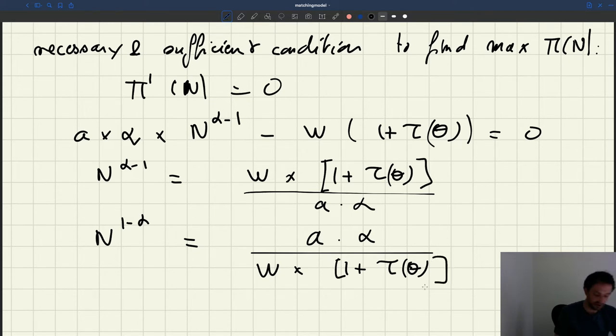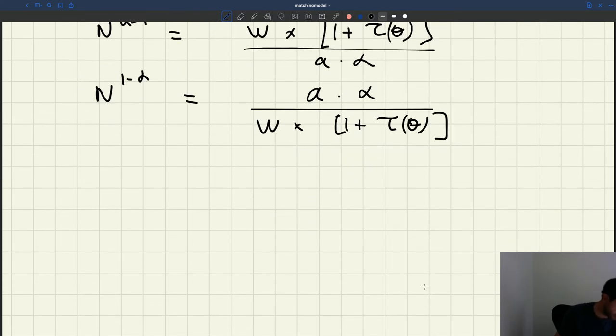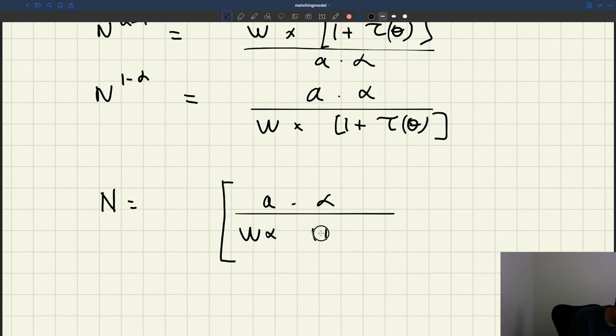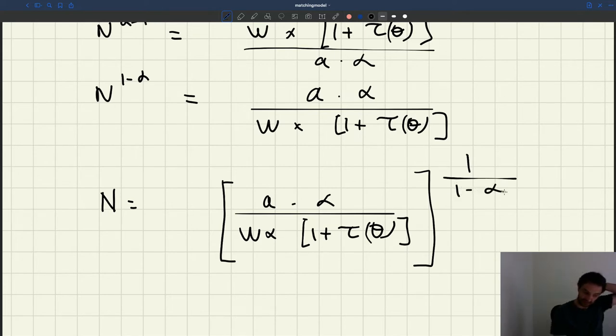And then what I'm interested in is actually the number of producers. So I get that n is equal to [a times α divided by w times (1 + τ(θ))]^(1/(1-α)). And then of course I have to make an exponent here of 1 over 1 minus α. So I've basically exponentiated both sides of the equation by 1 over 1-α, which here gives me a 1 on the left-hand side.